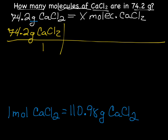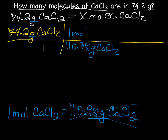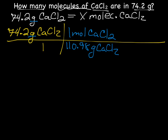Now we put the equality in the grid so units cancel out. Our known on top has units grams, so we put 110.98 grams of calcium chloride on the bottom and one mole of calcium chloride on top. Let's check: grams calcium chloride here cancels grams calcium chloride here. We're left with the unit mole, but we want molecules, which means we need one more step.